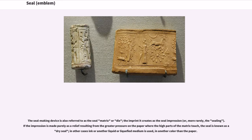The seal-making device is also referred to as the seal matrix or die, the imprint it creates as the seal impression, or, more rarely, the sealing.